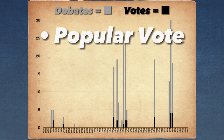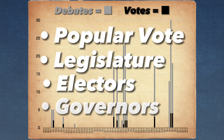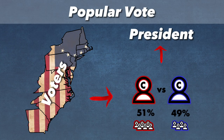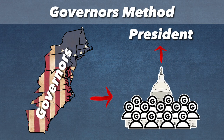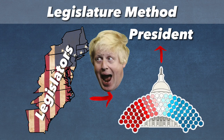Early debate methods included the popular vote, the legislature, a body of electors, and the governors' method. The popular vote selects the president by a majority of all votes in a national election. The governors' method would have the governors of each state meet to deliberate and choose the president. The legislature method would allow one or both chambers of the legislature to deliberate and choose the president — essentially a parliamentary system.